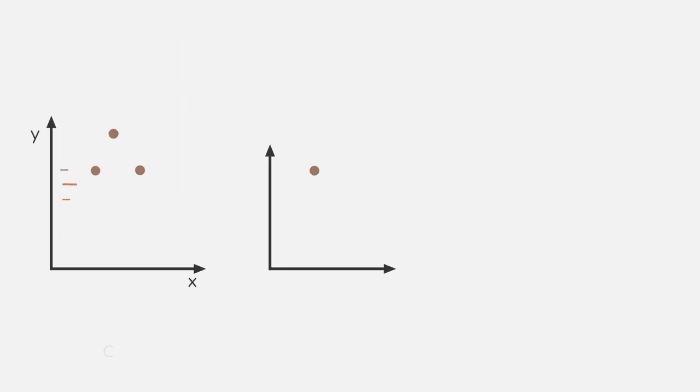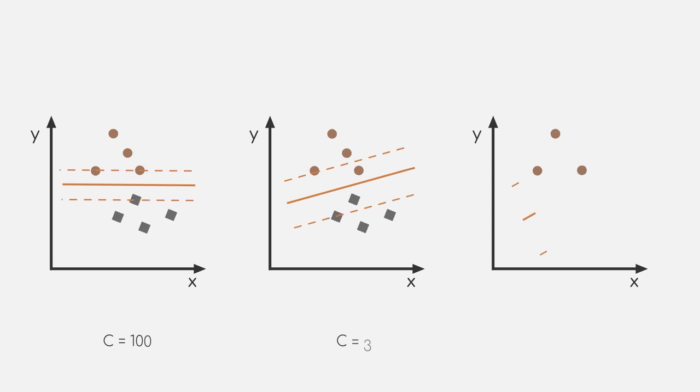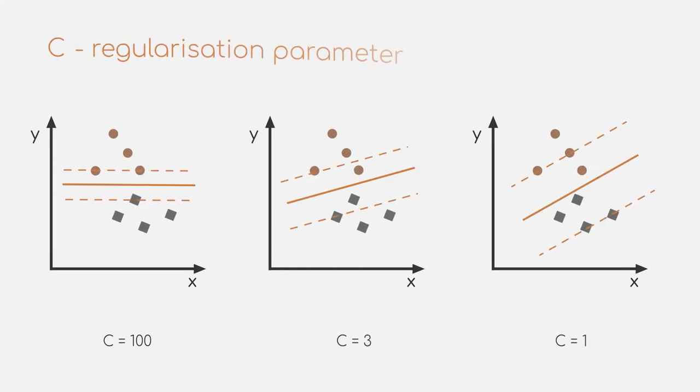Talking about margins in SVMs, I also want to mention a related hyperparameter. This hyperparameter, which many available implementations only refer to as C, is a regularization parameter influencing how large your margin is. A smaller value for this parameter leads to a bigger margin.